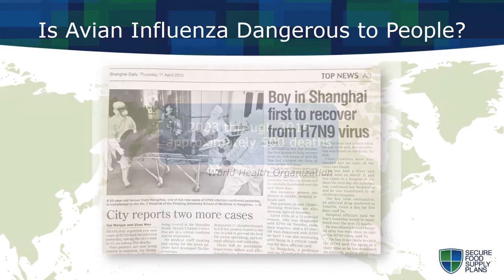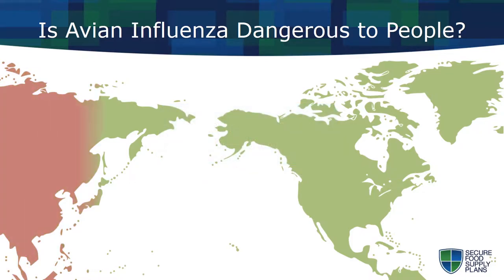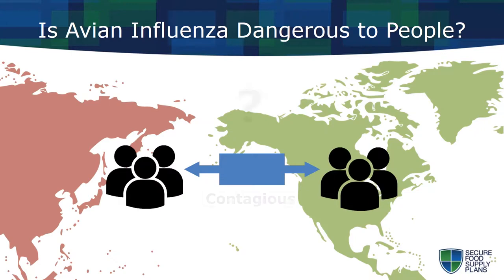According to the World Health Organization, from 2003 through 2016, approximately 500 human deaths due to avian influenza worldwide have been confirmed, the vast majority occurring in Asia. The virus has not thus far demonstrated the ability to be easily transmitted from one person to another, although there is a concern among public health officials that mutation could result in a form contagious among humans.